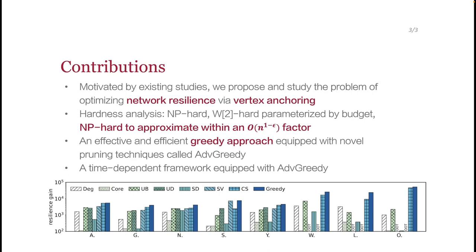Our contributions in this work are summarized as follows. Based on the above motivations, we propose and study the problem of optimizing network resilience via vertex anchoring. We theoretically analyze the problem hardness and show the problem is NP-hard, W2-hard parameterized by budget, and NP-hard to approximate. We present an efficient greedy approach called ADV Greedy, and extensive experiments comparing our method with other existing heuristics show that the greedy always performs the best. However, as our analysis shows, the greedy cannot provide any theoretical guarantee.